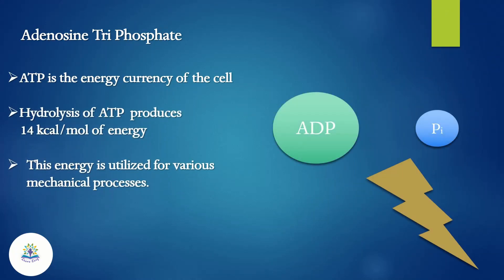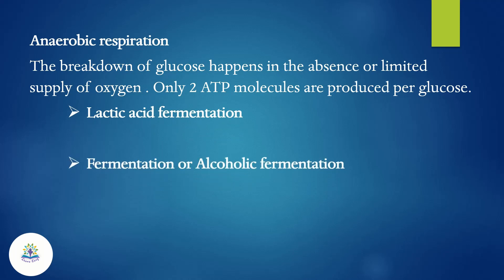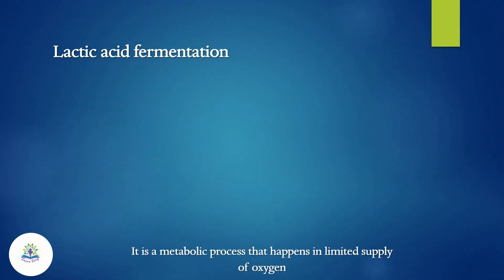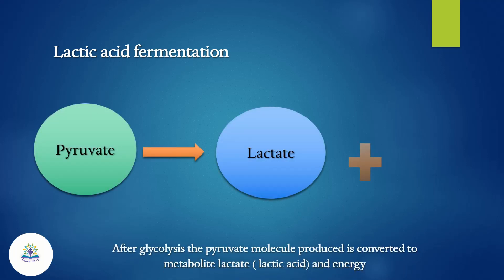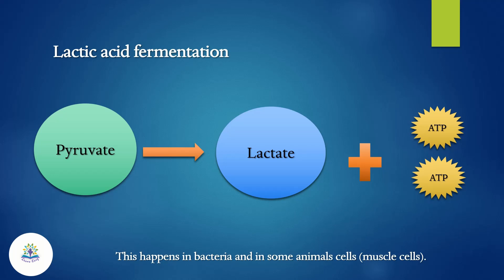This energy is utilized for various mechanical processes. In anaerobic respiration, the breakdown of glucose happens in the absence or limited supply of oxygen, and only two ATP molecules are produced per glucose. There are two types: lactic acid fermentation and alcoholic fermentation. Lactic acid fermentation is a metabolic process that happens in limited supply of oxygen. After glycolysis, the pyruvate molecule produced is converted to lactate and energy. This happens in bacteria and in some animal cells such as muscle cells.